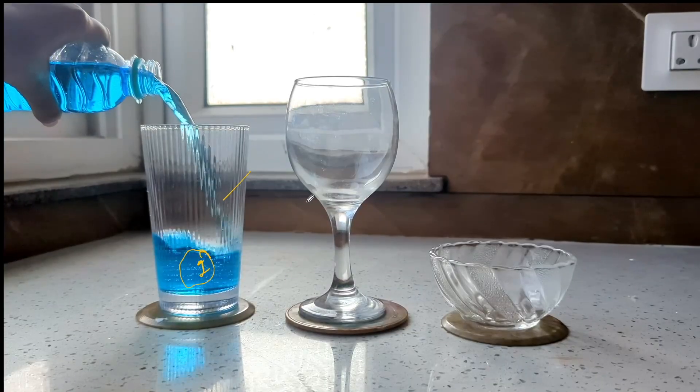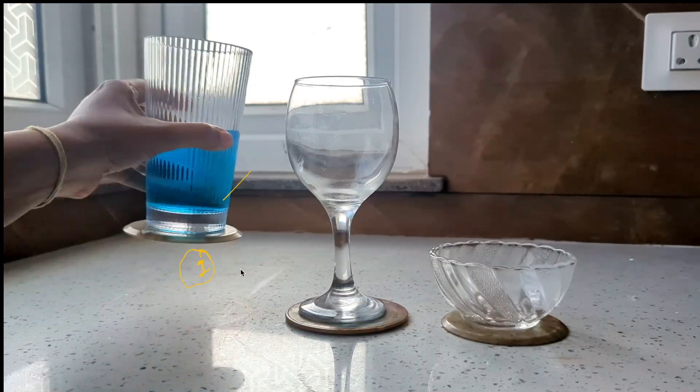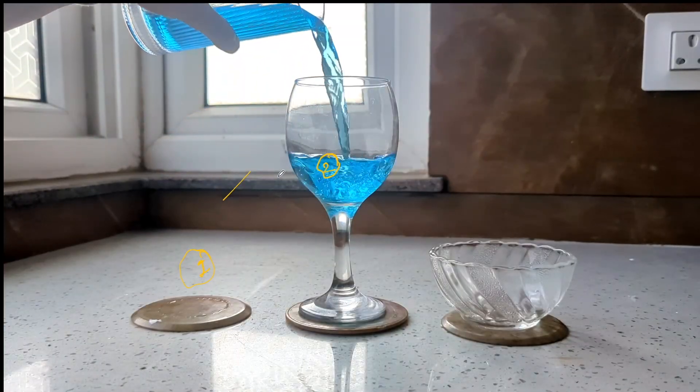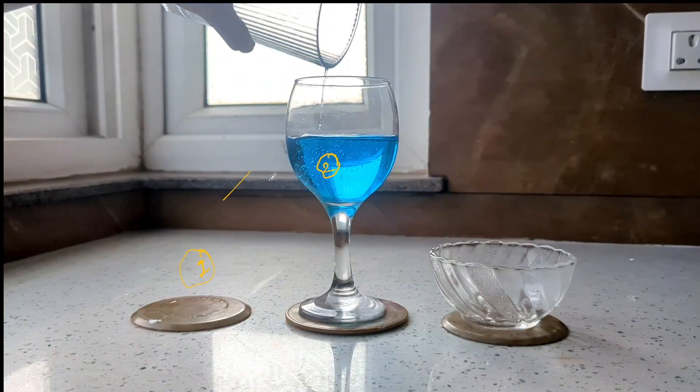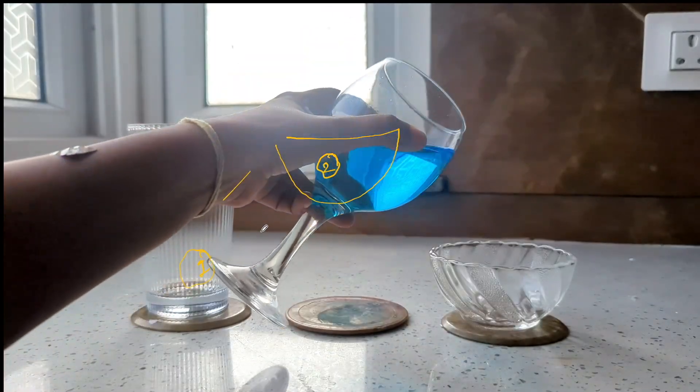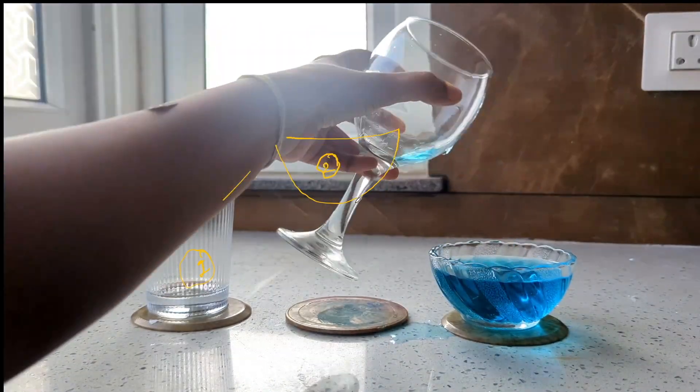Notice that as I pour it into glass number one, it kind of takes up the shape of the glass. Now, let me take the same water and pour it into glass number two. As I pour it into the second glass, it ends up taking the shape of the second glass. And now from this, when I pour it onto the bowl, we see that the water takes up the shape of the bowl as well.